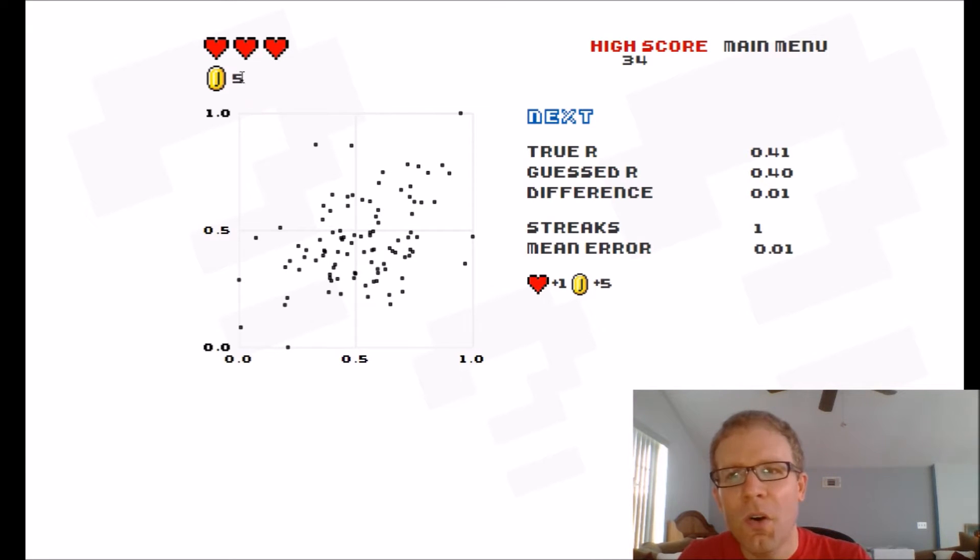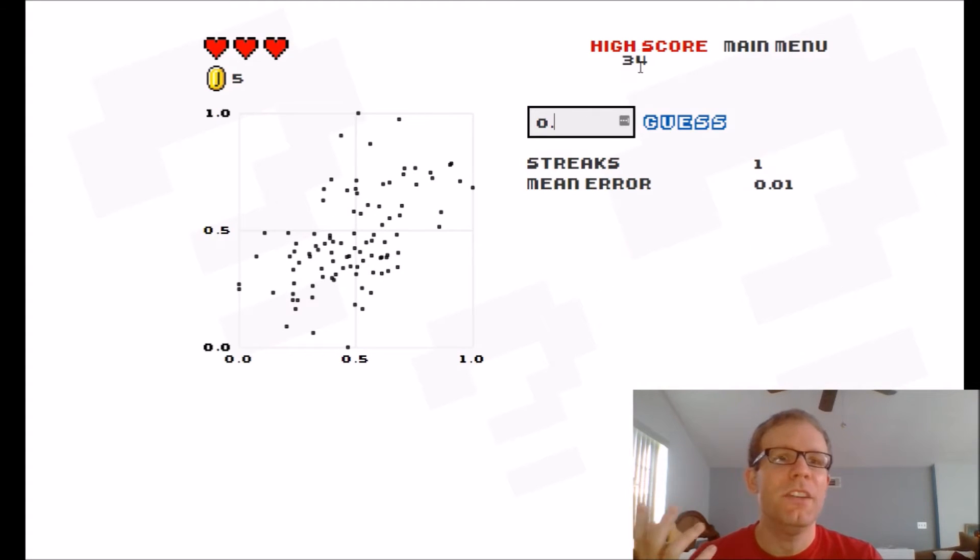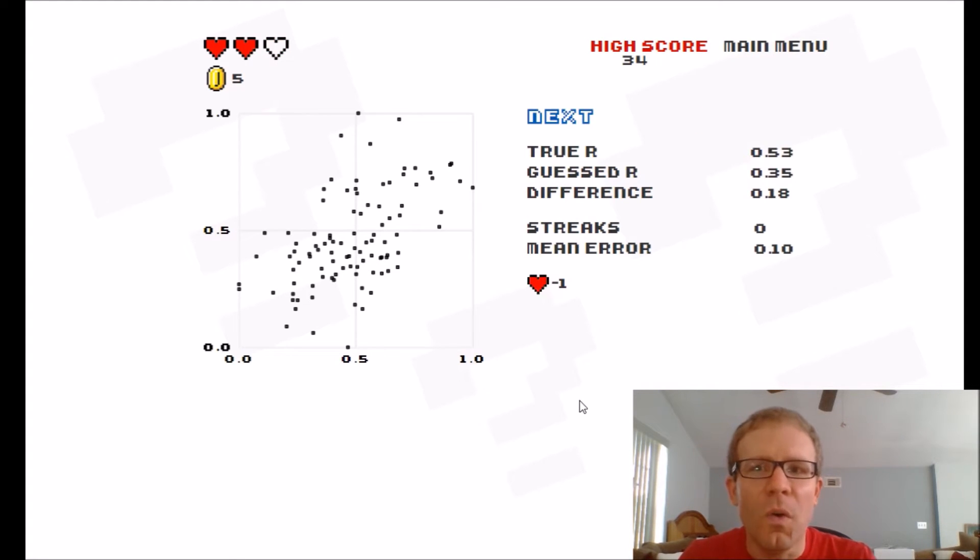And I think your coins is your score. I'm not sure. Because one of the things that I've noticed about this is it doesn't display your current score. It displays your high score. And I didn't take note of how the coins translated into my score. So we'll figure it out in a second. This one looks a little bit less correlated than the previous one. I'm going to maybe go 0.35. Oh that did not work out so well. I got a 0.53. A difference of 0.18. So I lost a heart there.